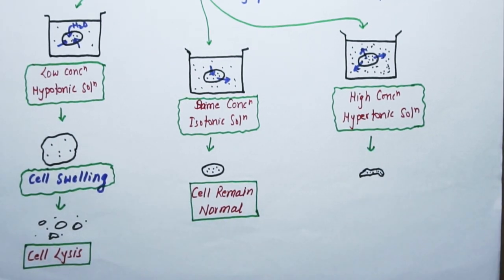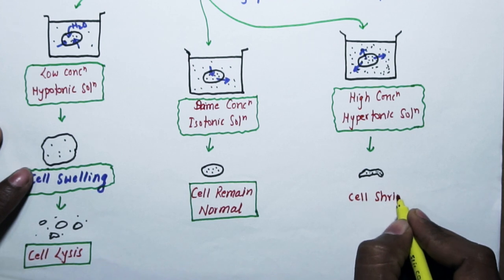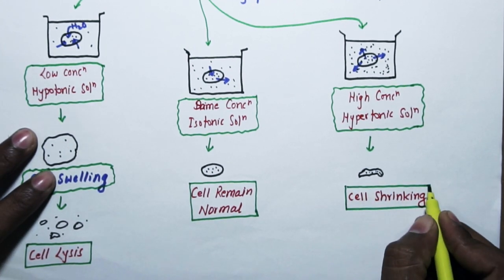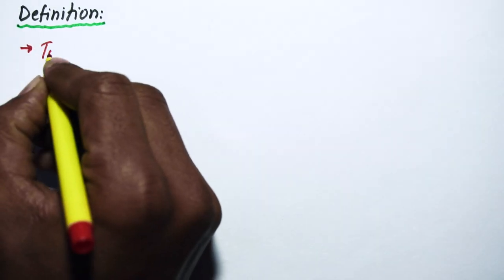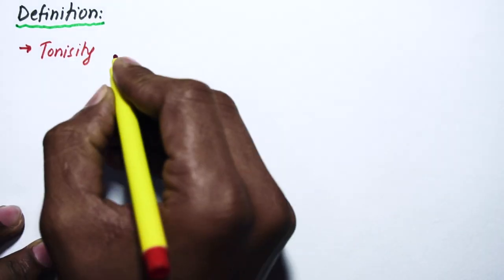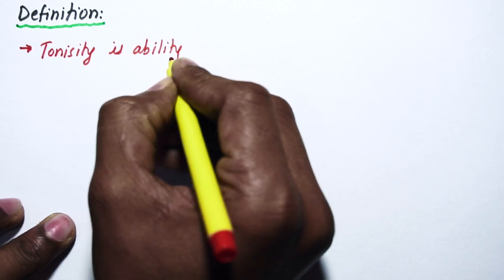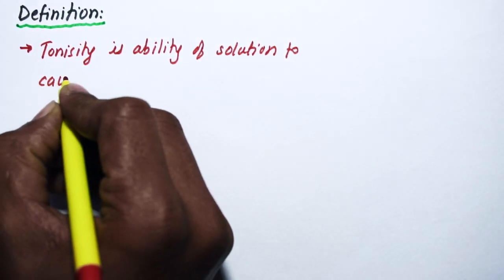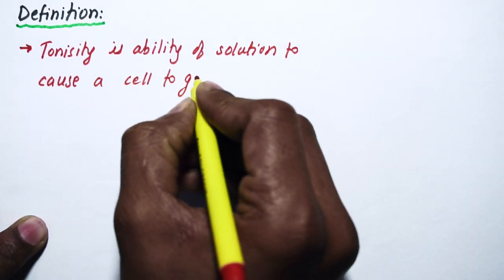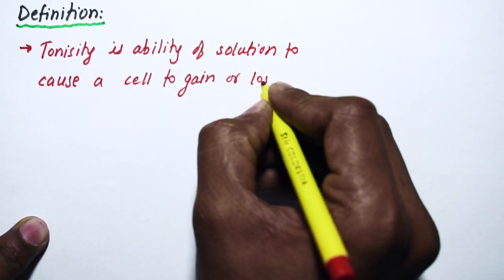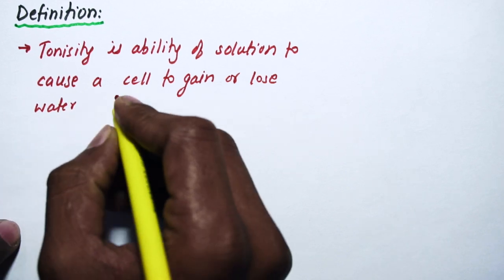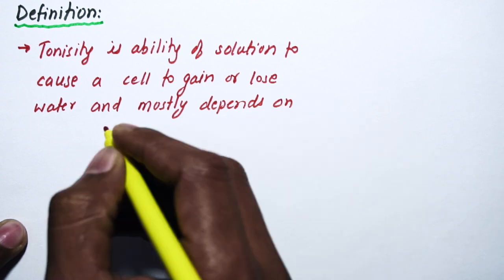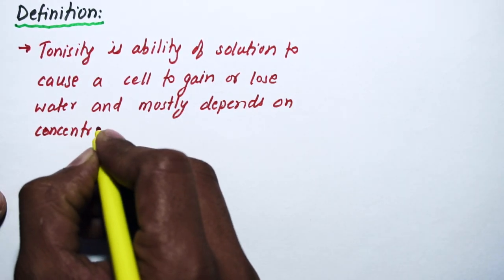In the third beaker, where the cell is continuously losing water, that leads to cell shrinking. Now we will define tonicity. Tonicity is the ability of a solution to cause a cell to gain or lose water and mostly depends on the concentration of solute or salts on both sides of the cell membrane.